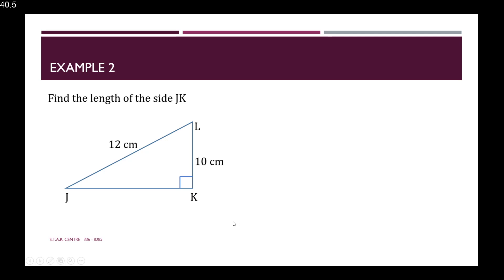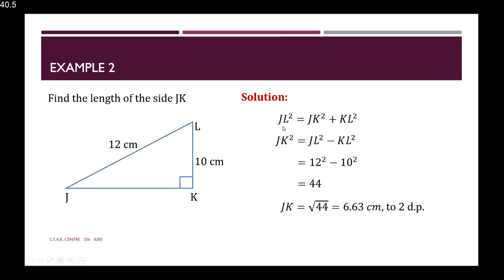Example 2: Find the length of the side JK. JK is not the hypotenuse of the triangle, unlike our previous example. Starting with Pythagoras theorem — the hypotenuse squared equals the sum of the squares of the other two sides — and rearranging to make JK the subject, we get JK squared equals JL squared minus KL squared. This gives us 12 squared minus 10 squared, which equals 44. So JK is the square root of 44, which is 6.63 centimeters to two decimal places.